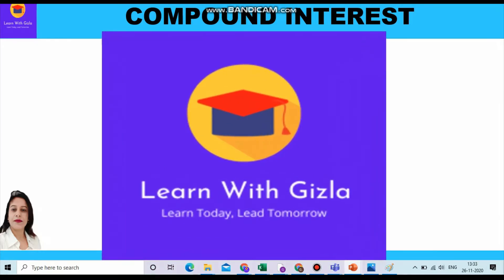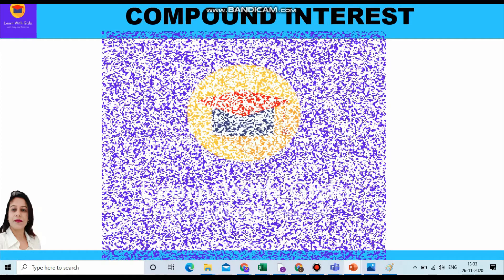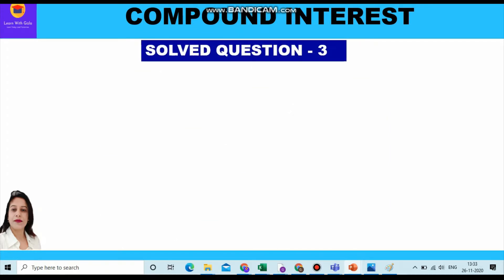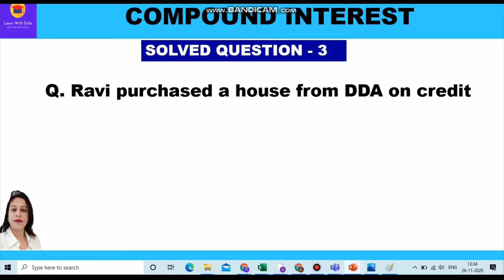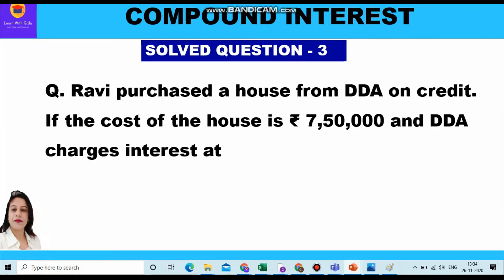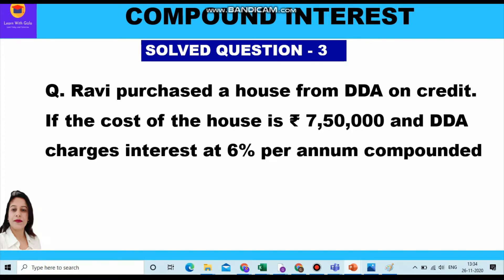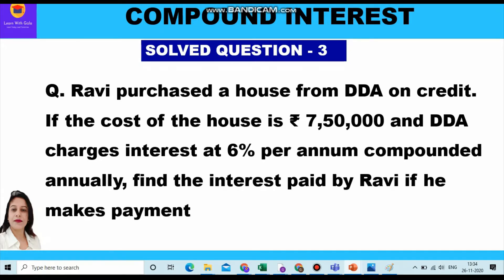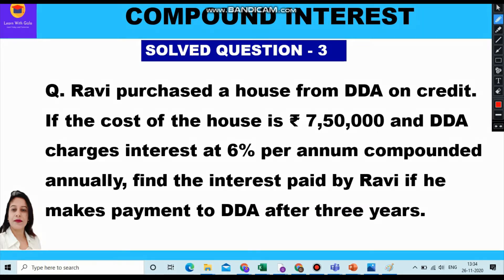Hello dear students, welcome to YouTube channel Learn with Gizla. In this video we shall take up a question related to compound interest. Ravi purchased a house from DDA on credit. The cost of the house is seven lakh fifty thousand and DDA charges interest at six percent per annum compounded annually. Find the interest paid by Ravi if he makes the payment to DDA after three years.